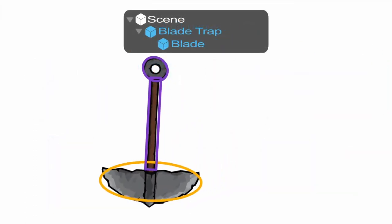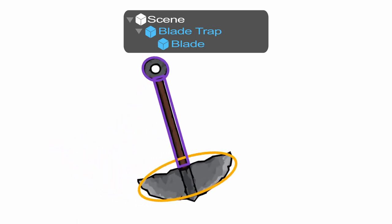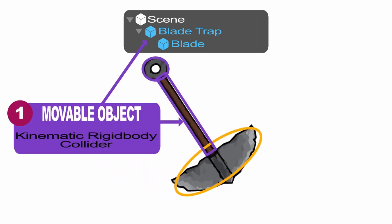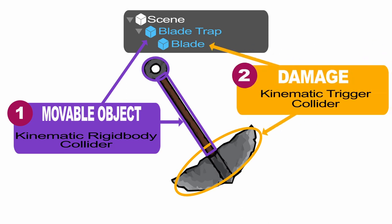A moving trap would be constructed from a movable object as the arm of the trap, which blocks the player to skip the trap, and a damage collider for the blade to cause damage. They share a kinetic rigid body as the trap is moved by a script. I place the trigger on a child game object so I can control its interactions separately.